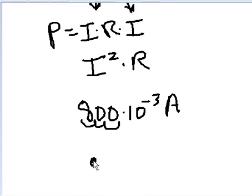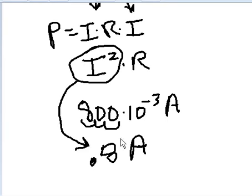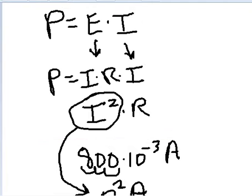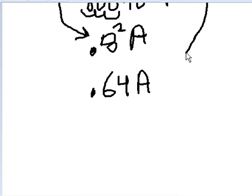All right, now I squared is 0.8 squared. 0.8 squared is 0.64 amps. Now let's bring down the 0.64 amps, now let's bring down the R. How much was our R?